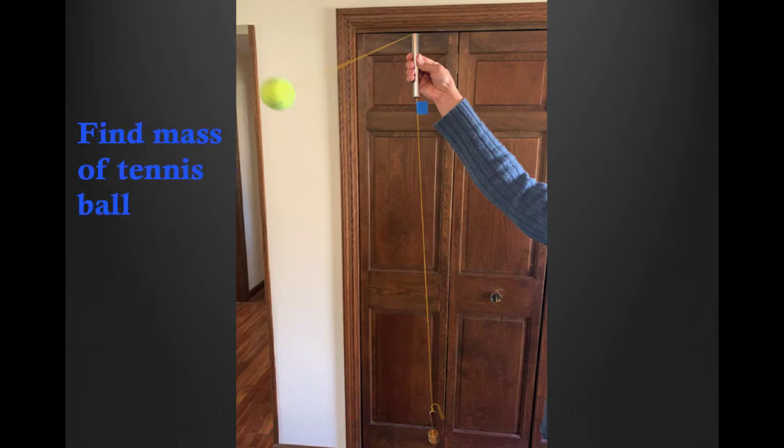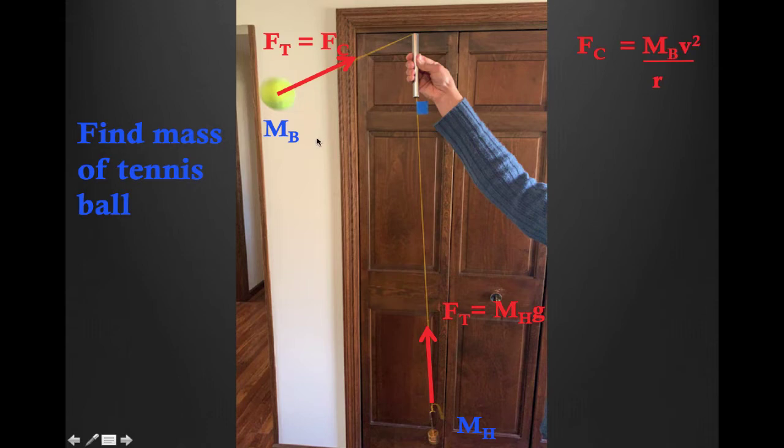How can we use this setup to find the mass of the tennis ball? We need to analyze the forces acting on the ball. Tension due to the hanging weight is the centripetal force. This tension is calculated by multiplying the hanging mass by g. Centripetal force also equals mv² over r. Note that the mass here is the mass of the object that is swinging, so it is the mass of the tennis ball. Replacing Fc with FT and FT equals Mhg, by manipulating this equation, we can figure out the mass of the ball if we know the hanging mass, the radius, and speed.